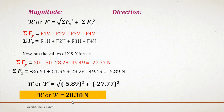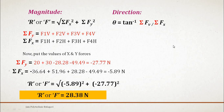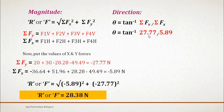For the direction, θ = tan⁻¹(ΣFy / ΣFx). Since both values are negative, minus divided by minus gives a positive ratio. Using the magnitudes: tan⁻¹(27.77 / 5.89). The direction of the resultant force is 78 degrees 0.01 minutes. We have now found both the magnitude and direction of the resultant force.